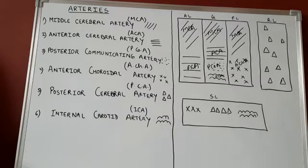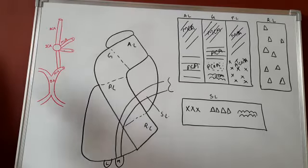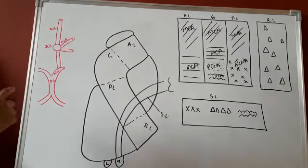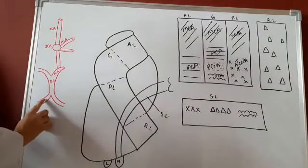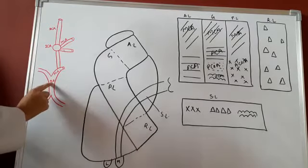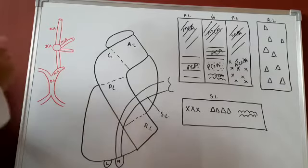Now I will tell you how to draw the diagram for the blood supply of the internal capsule. First of all, you should know which main arteries the supplying arteries are branches of. These two are the vertebral arteries, and the two vertebral arteries unite to form the basilar artery — BA stands for the basilar artery. The posterior cerebral artery, PCA, is the branch of the basilar artery.